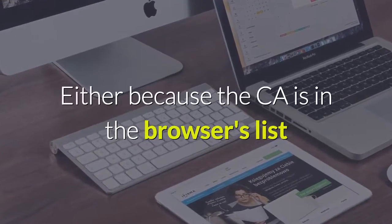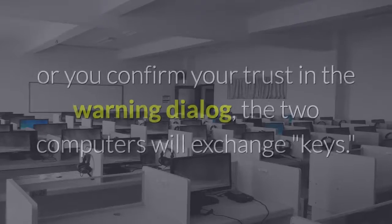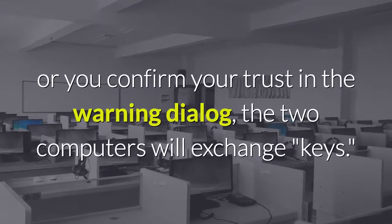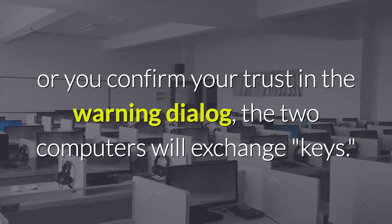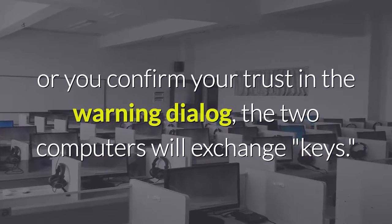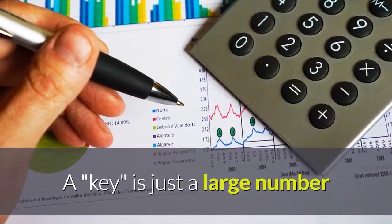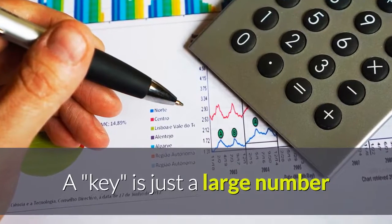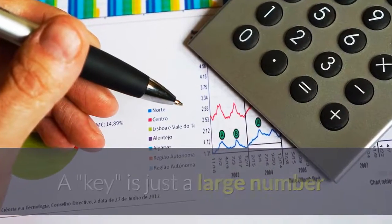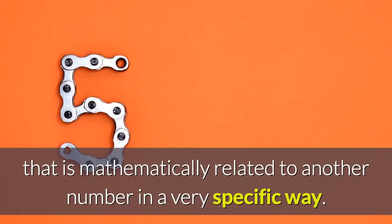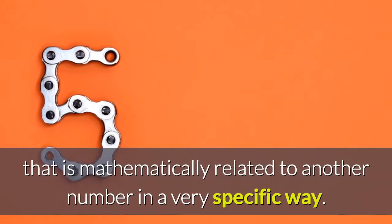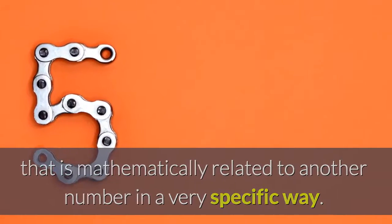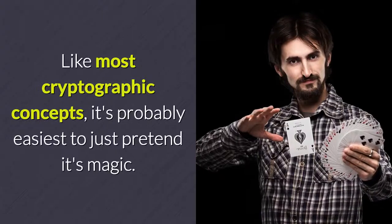— either because the CA is in the browser's list or you confirmed your trust in the warning dialogue — the computers will exchange keys. A key is just a large number that is mathematically related to another number in a very specific way.